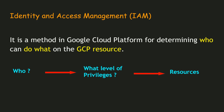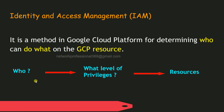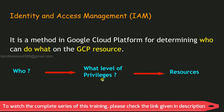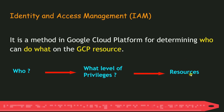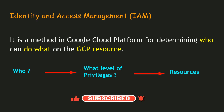By definition, IAM is a method in the Google Cloud Platform that's used to determine who can do what on the GCP resources. For example, 'who' may be a person like Shiva. What level of privilege does he have — either read-only access, write access, or the ability to create projects. So, what level of privilege and to which resources in the Google Cloud Platform. IAM is a method used to determine who can do what on GCP resources.